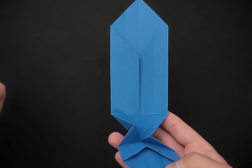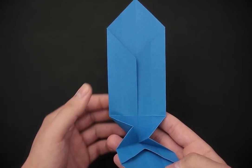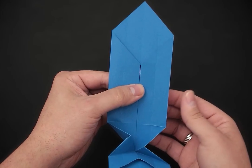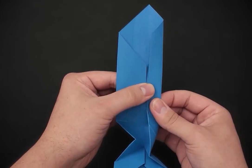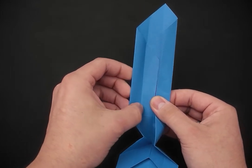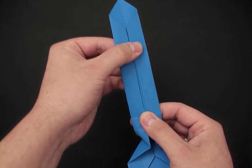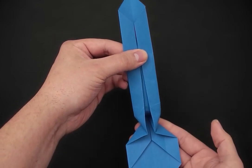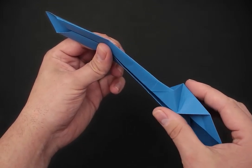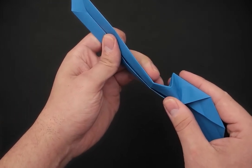Then we can hold the paper in this position. Now in the larger part, we're going to bring both sides to the middle using the lines we've already made. First the right, then the left. And after that we're going to press the paper to flatten the back.